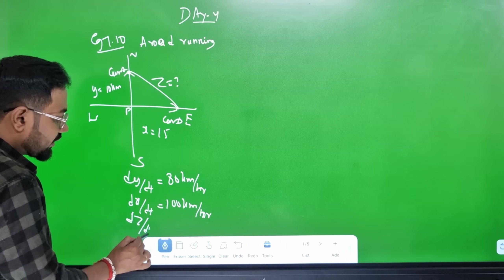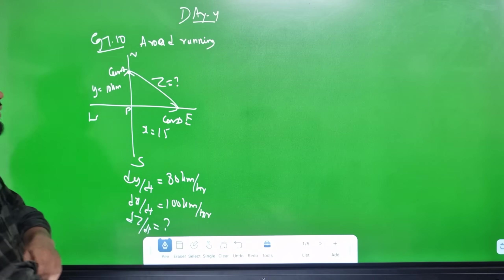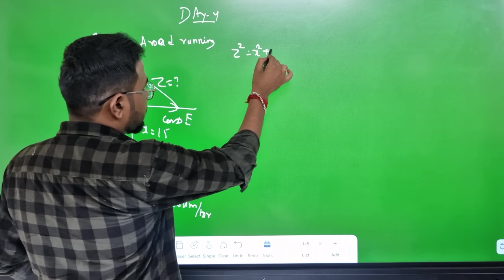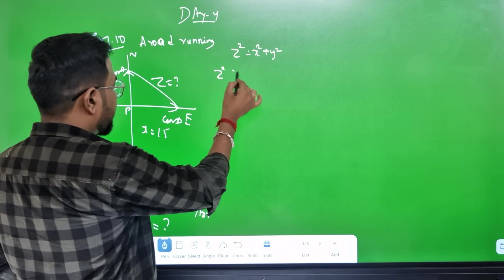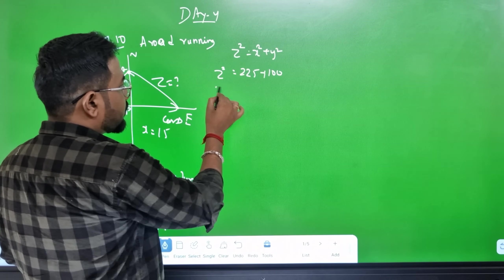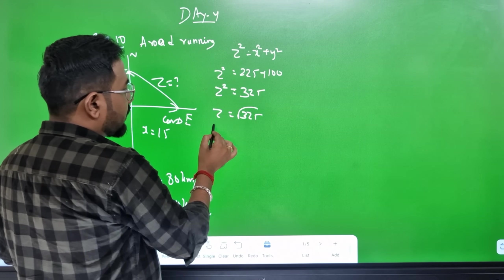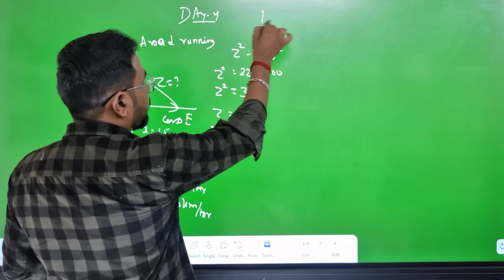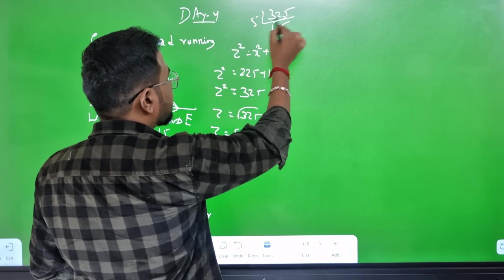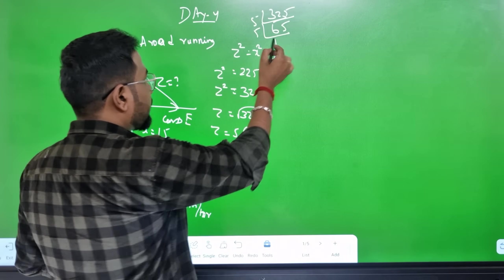We set up the equation. dx/dt is the rate of change. 10 squared is 100, and 15 squared is 225, so z squared is 325. Therefore z = √325 = 5√13.